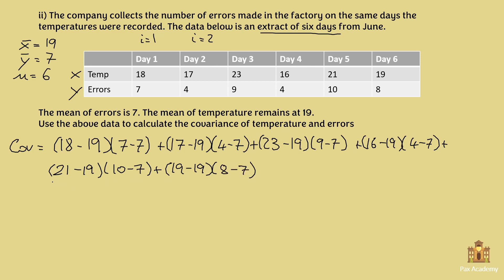And then we have this whole thing over n minus 1, so 6 minus 1. Excellent. So now we can simplify these terms. So 18 minus 19 is minus 1, times 7 minus 7, which is 0. So remember, anything times 0 is 0. So you can just forget about this term.